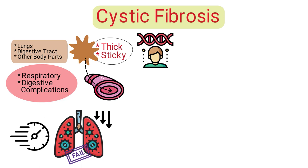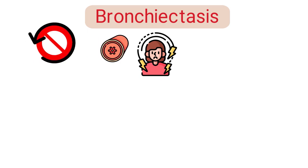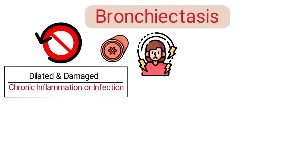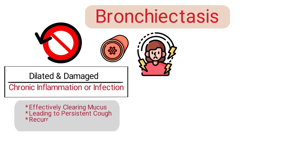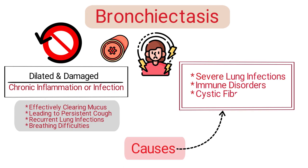Then we have bronchiectasis, which is a chronic condition where the bronchial tubes in the lungs become irreversibly dilated and damaged due to chronic inflammation or infection. This damage prevents the airways from effectively clearing mucus, leading to persistent cough, recurrent lung infections, and breathing difficulties. Causes can include severe lung infections, immune disorders, or conditions like cystic fibrosis.